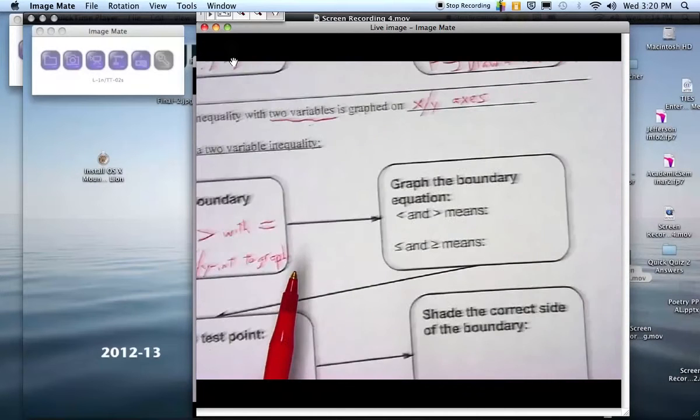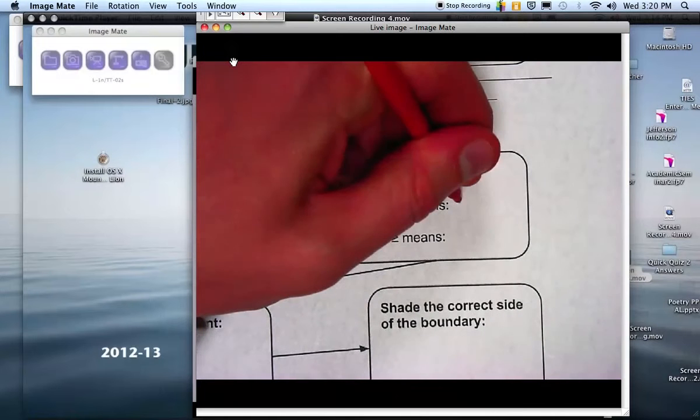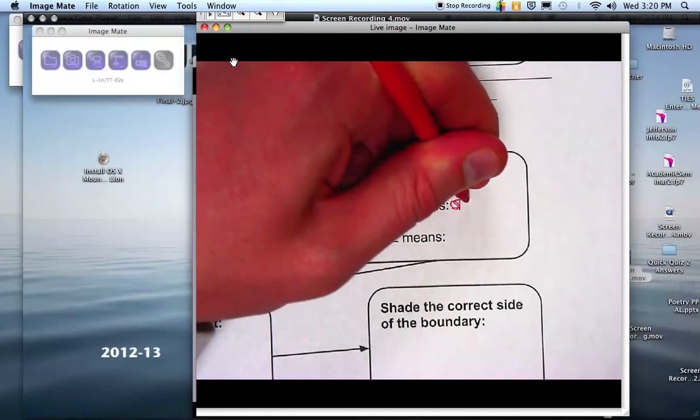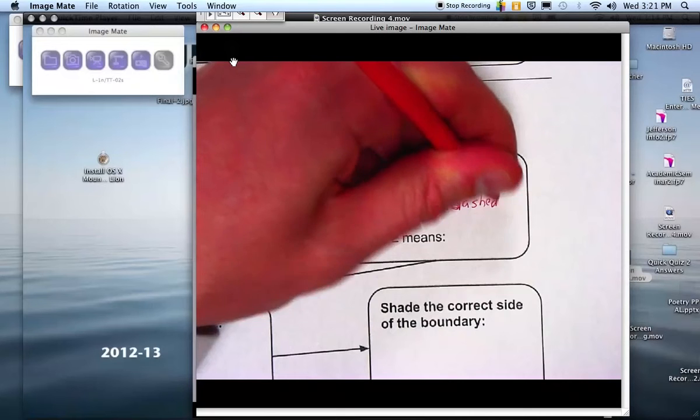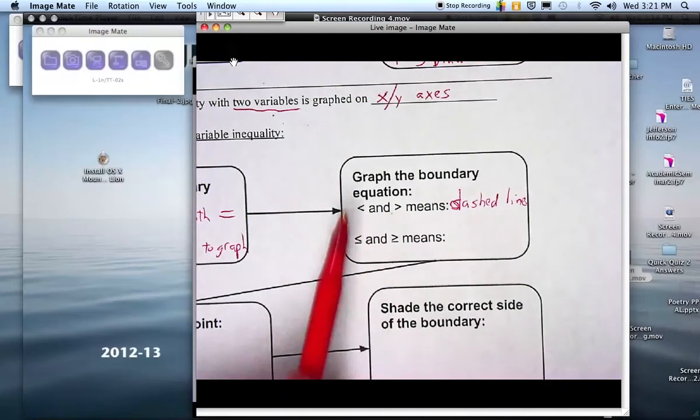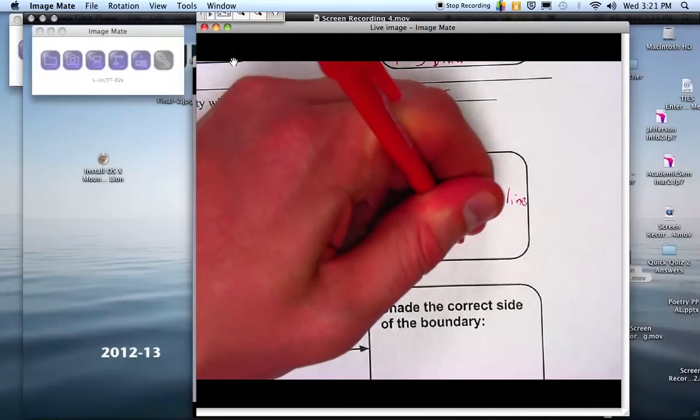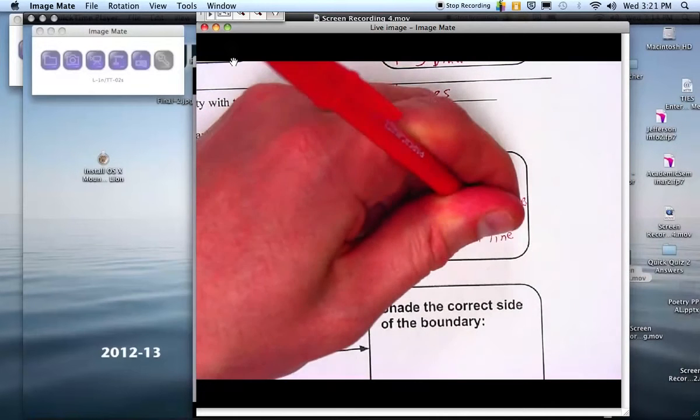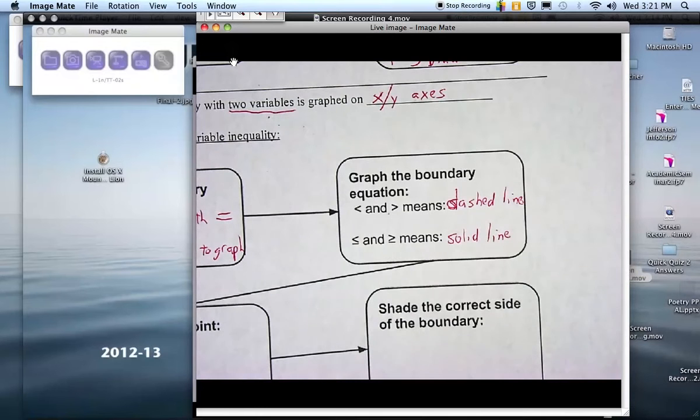And remember that we don't have open and closed circles now. We now have solid and dashed lines. And so if there is no equal bar, it's a dashed line. If there is an equal bar, then it's a solid line. And we did an example with that today.